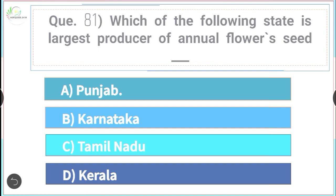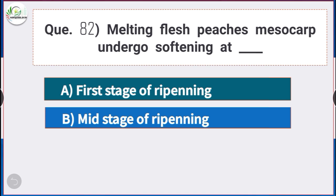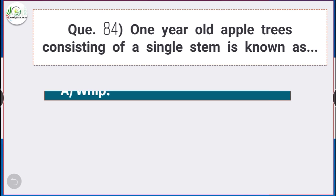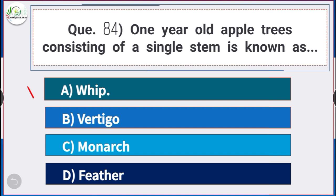Question number 82: Melting flesh peaches undergo softening at — answer option C — last stage of ripening. Question number 84: One-year-old apple trees consisting of a single stem is known as — answer option A — whip.